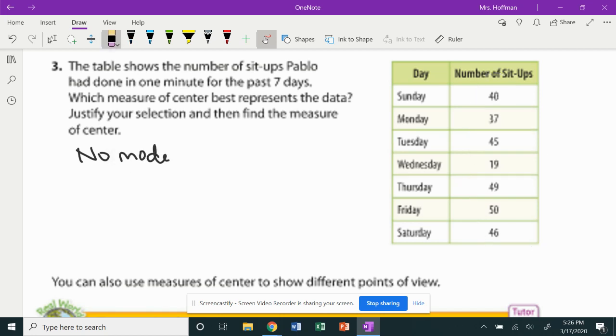Next, let's go ahead and take a look at the median. We need to get these in order. So I'm going to do that down below. So we have 19. Come on computer. You've got this. 19, 37, maybe, maybe we've got this. Well, you're going to get them in order. My computer does not want to work with me right now. 19, then 37, then 40, then 45, 46, 49, and 50.